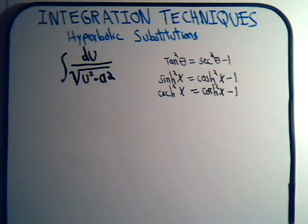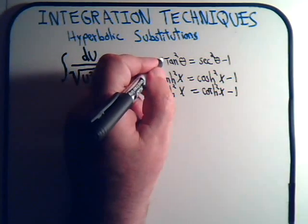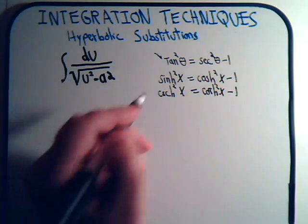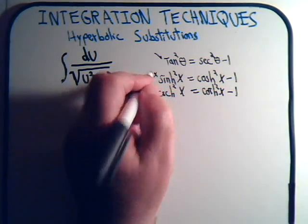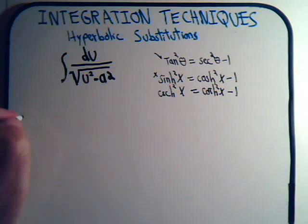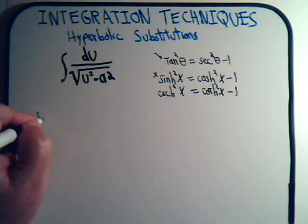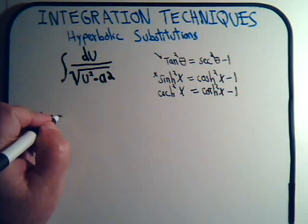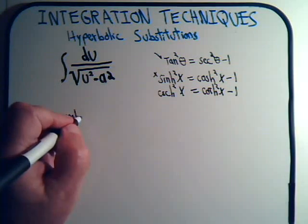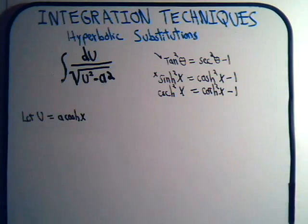If we were doing this with a trig substitution, then of course we would use that identity. In this video, let's try to solve this integral with a hyperbolic substitution. We start off by letting u equal a times the hyperbolic cosine of x.